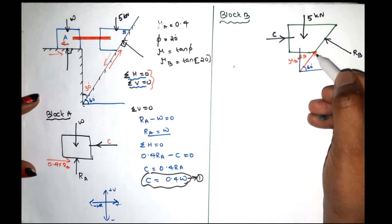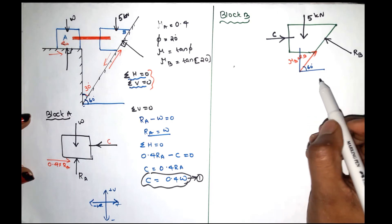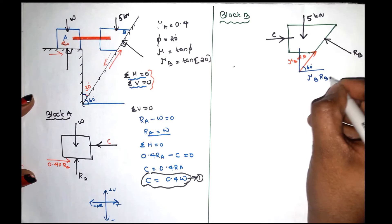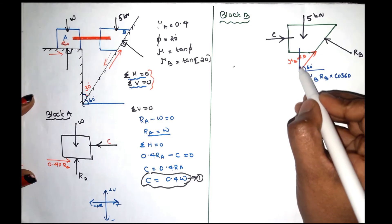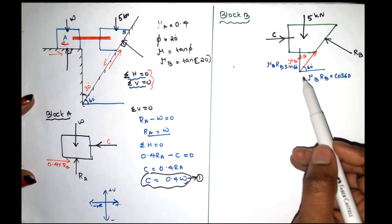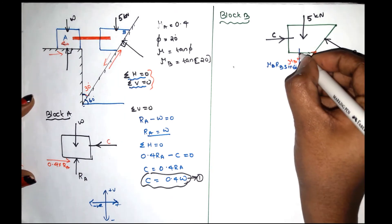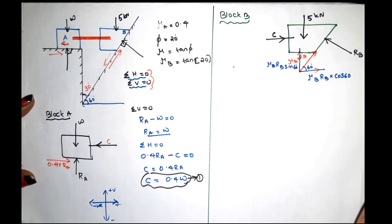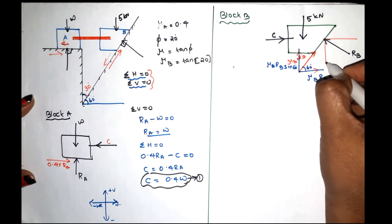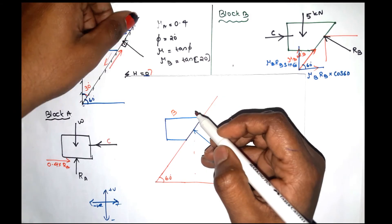The friction force mu_B times RB is resolved: its horizontal component is mu_B·RB·cos60, and its vertical component is mu_B·RB·sin60. The reaction RB is also resolved: RB·cos60 is the horizontal component, and RB·sin60 is the vertical component. The direction of the friction force is outward along the inclined surface.